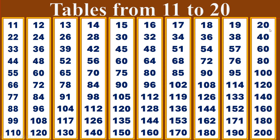20 times table. 20 ones are 20. 20 twos are 40. 20 threes are 60. 20 fours are 80. 20 fives are 100. 20 sixes are 120. 20 sevens are 140. 20 eights are 160. 20 nines are 180. 20 tens are 200.